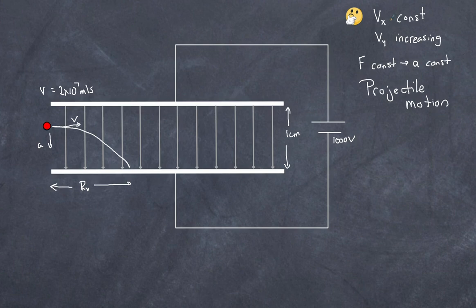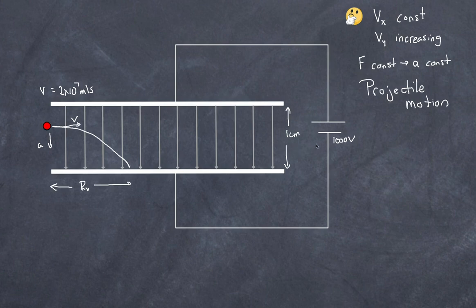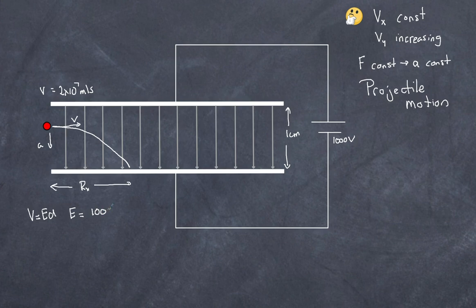The thinking process: I need the range, so I need the acceleration, which requires the force, which requires the electric field. E = V/d: 1000 / 0.01 = 1×10⁵ V/m. The force F = EQ: 1×10⁵ × 1.6×10⁻¹⁹ = 1.6×10⁻¹⁴ N.